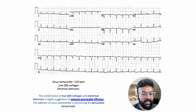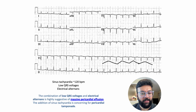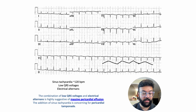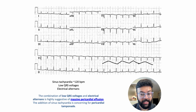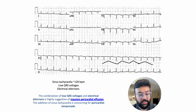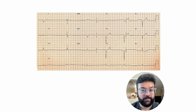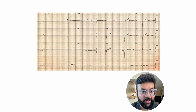Next case: this is sinus tachycardia with low voltage QRS complexes. That is diagnostic of massive pericardial effusion causing pericardial tamponade. The next step in management is a quick bedside assessment — this patient needs CT surgery involvement, either emergent pericardiocentesis or surgery depending on the cause.